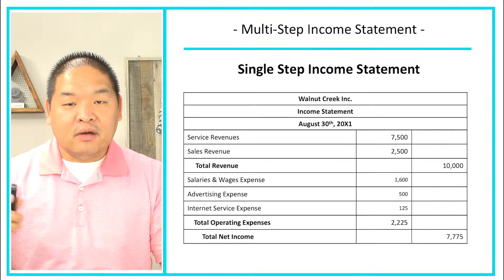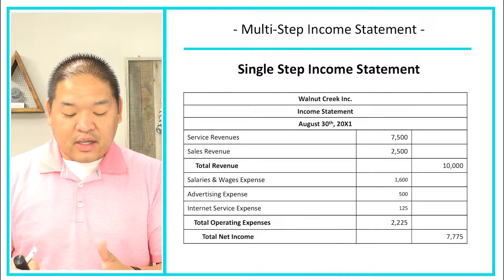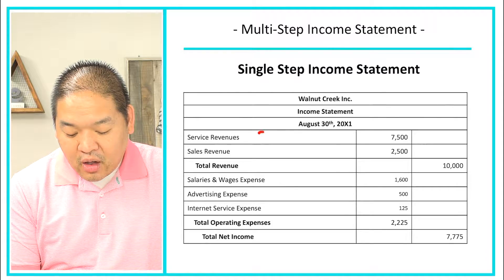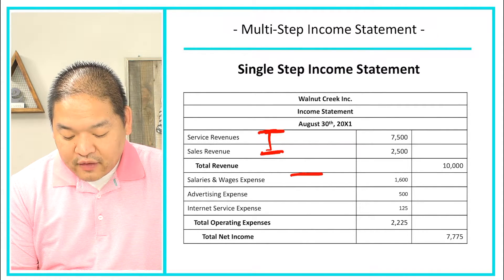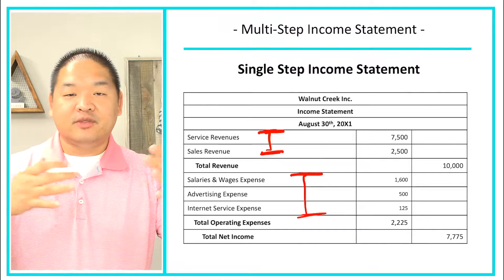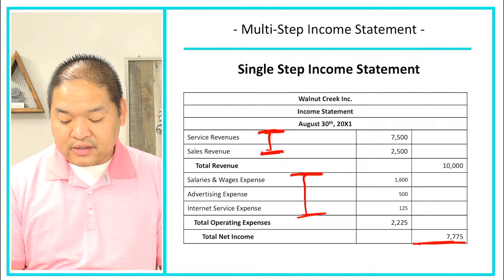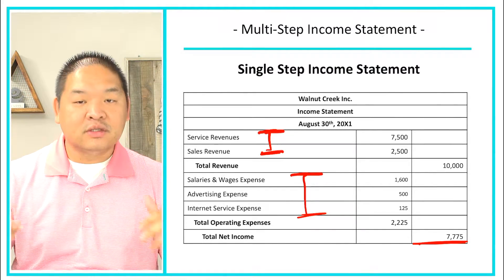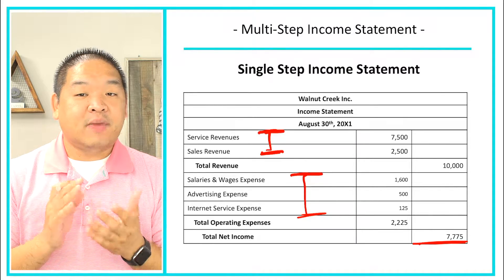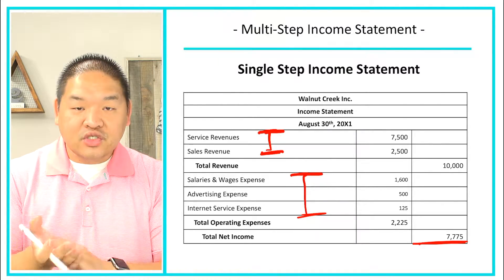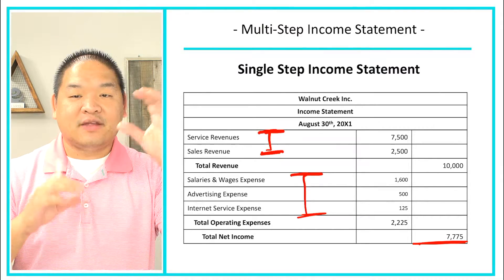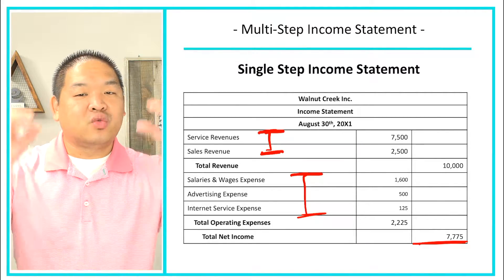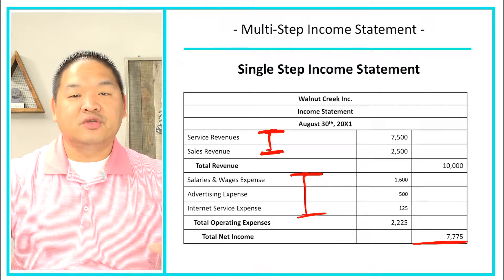Prior to this point in your accounting studies, we have been looking at a single step income statement. What makes it single? We've got all of our revenues and then all of our expenses, and then we take revenues minus expenses to get net income — and we are done. We group all of our ins (revenues) and all of our outs (expenses). Gains would go with revenues and losses would go with expenses. A single step just has one step: revenues, then down to expenses.